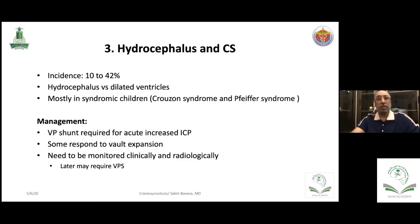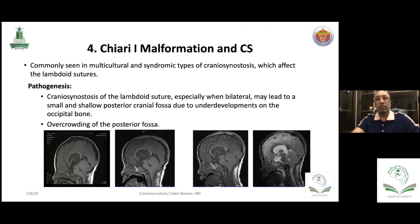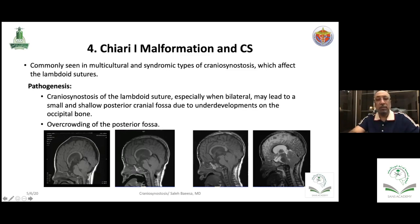Chiari malformation is common in multi-suture and syndromic craniosynostosis, especially the posterior type — lambdoid and posterior sagittal — where a small posterior fossa compresses the brain downward. One case: a child had Chiari with mild hydrocephalus; we did multi-suture reconstruction and the Chiari persisted but improved for many years, then he returned with syringomyelia without hydrocephalus. The approach is: treat hydrocephalus, treat craniosynostosis, and leave the Chiari at the end. Do not do decompression early for Chiari if there are no symptoms. Later, if it develops with syringomyelia, perform standard posterior fossa decompression.